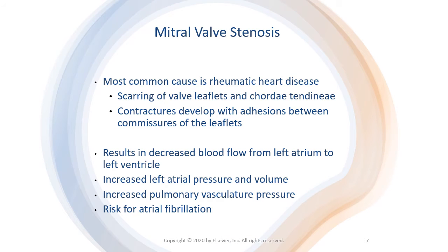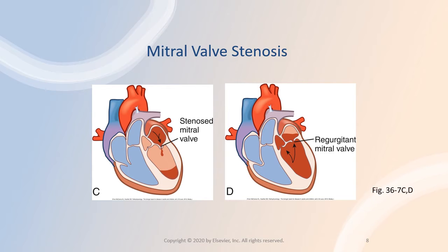The most common cause of mitral stenosis is rheumatic heart disease. Rheumatic mitral stenosis is widespread in developing countries. Less common causes are congenital mitral stenosis, rheumatoid arthritis, radiation exposure, and systemic lupus erythematosus. Rheumatic infective endocarditis causes scarring of the valve leaflets and the chordae tendineae. Contractures and adhesions develop between the commissures. The stenotic mitral valve takes on a fish mouth shape because of the thickening and shortening of the mitral valve structures.